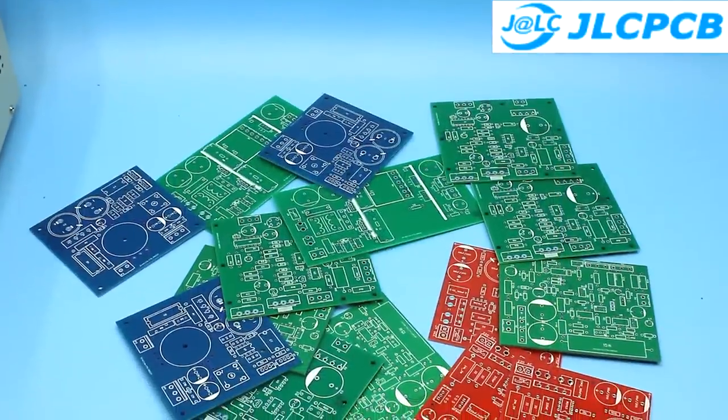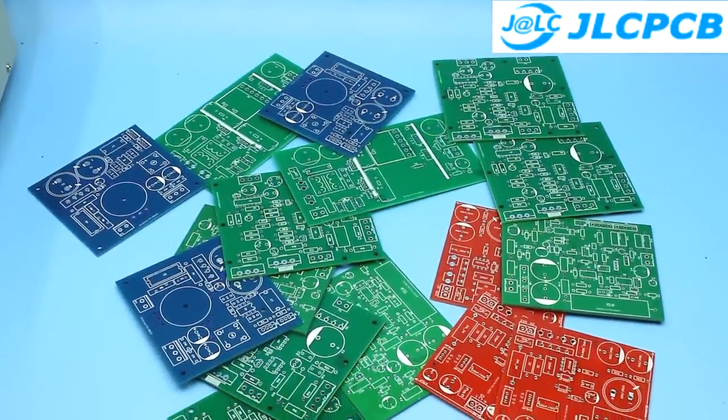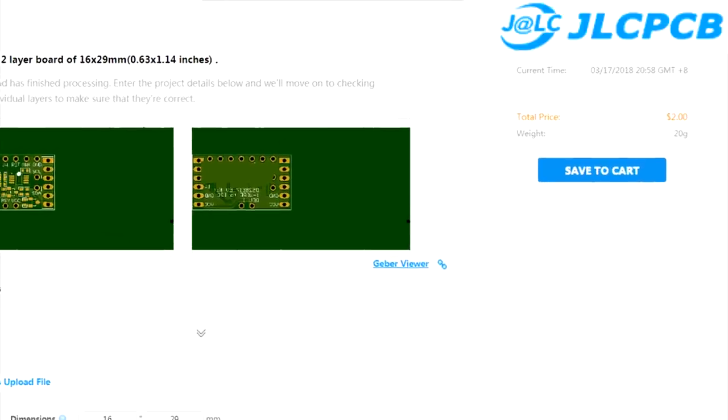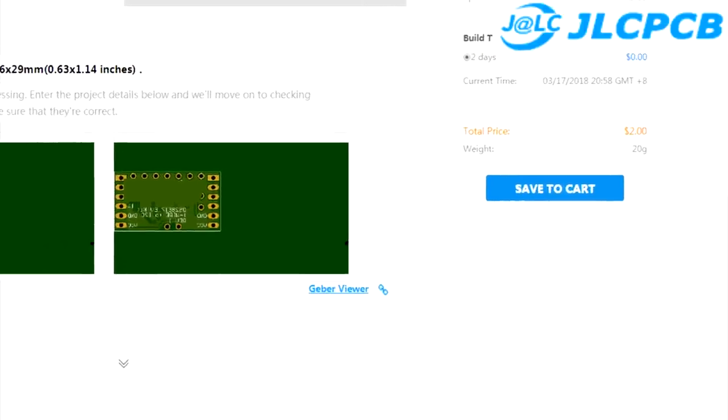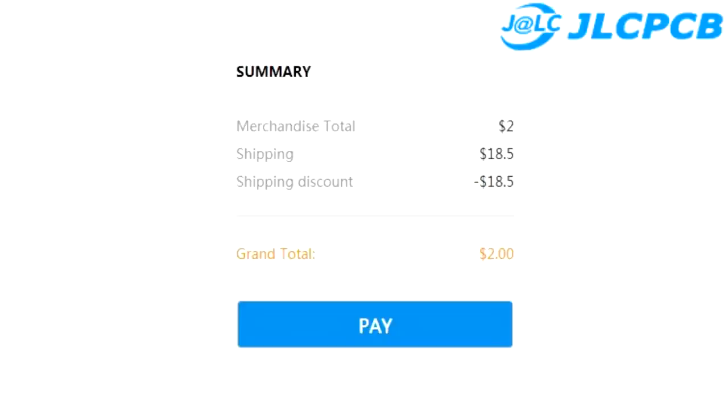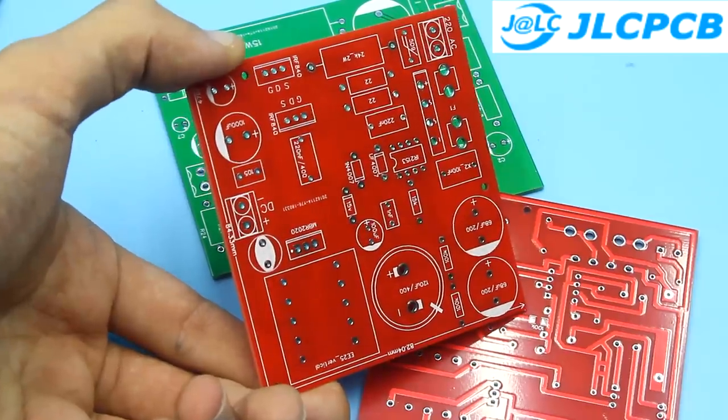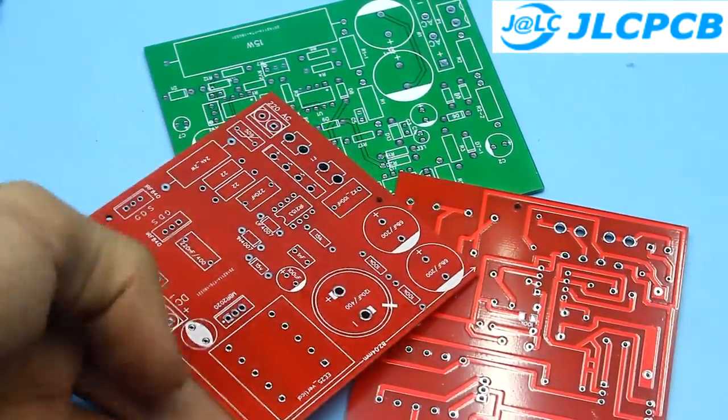One of the leading manufacturers of PCB of any complexity and size. The cost of the board starts from $2 for 10 pieces and free shipping is available for the first order. A link to JLCPCB website can be found in the description.